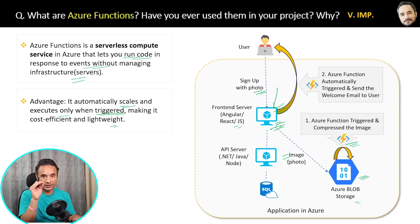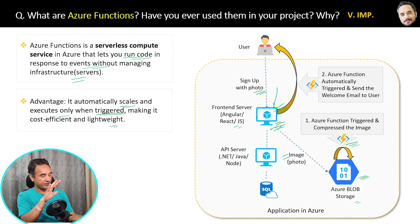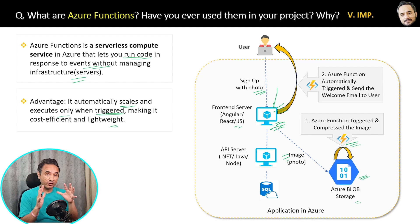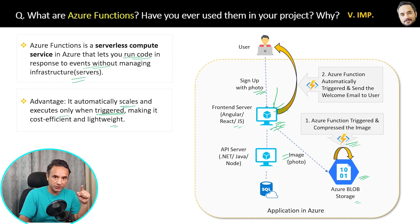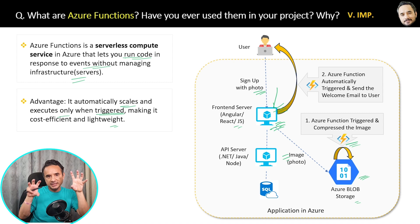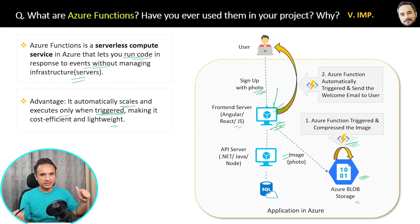If you want to revise for your interviews, just take a simple look at this clean and clear diagram and definition — revision done. Now, interviewers can also ask an indirect question: why don't you write the Azure Function code directly inside your main application? For example, the image compression code could be written directly inside the application — so why not do that? I will answer that in an upcoming question.